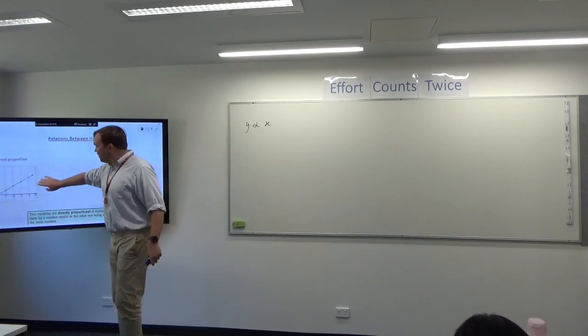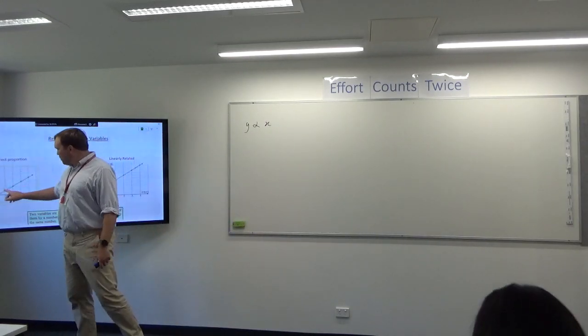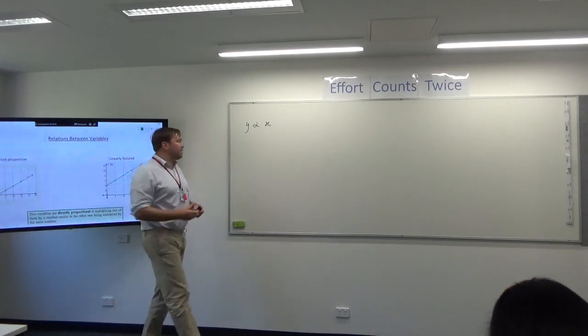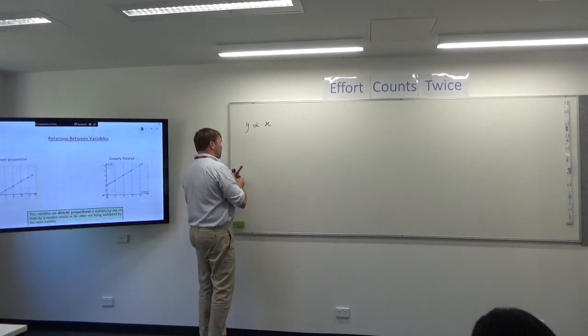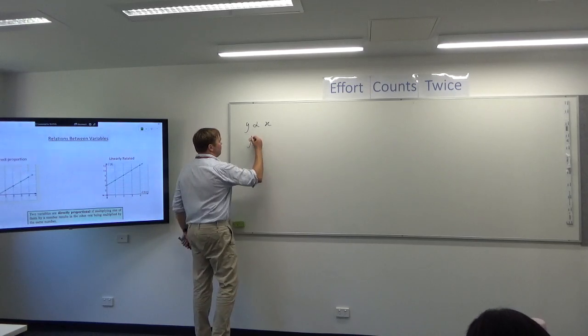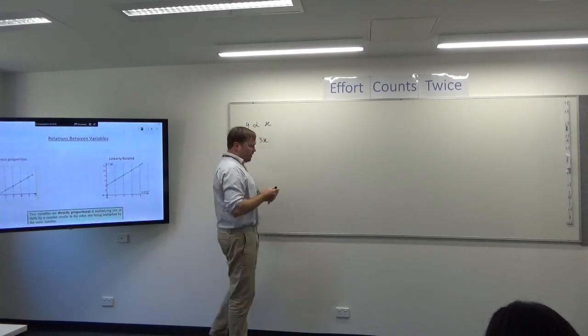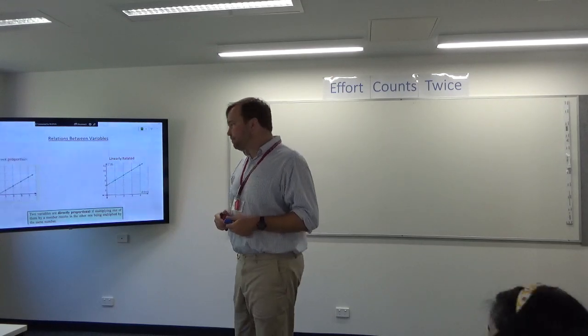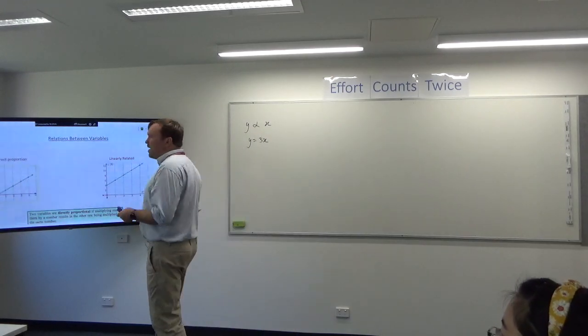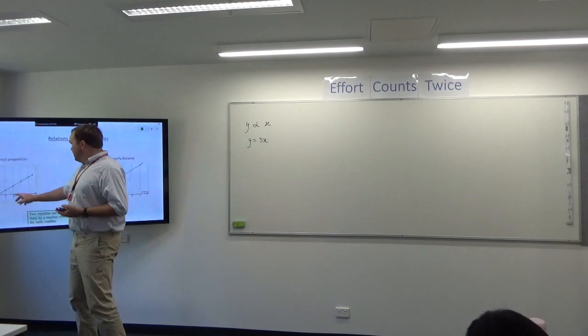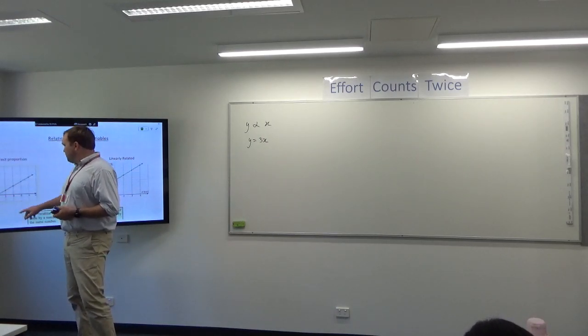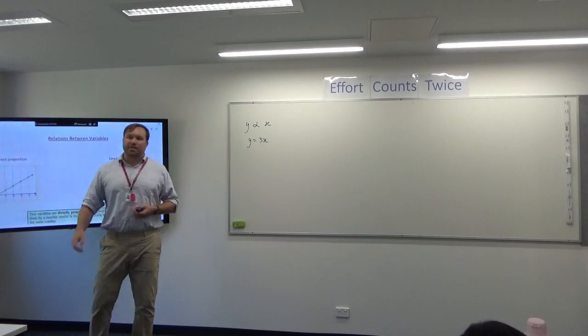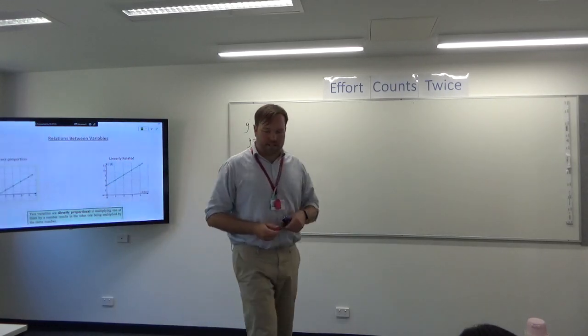This equation is, what, 1 across 3 up, 1 across 3 up. That equation is y equals 3x. But any line that goes through the origin that's a straight line, we would say it's directly proportional. And a way you can think of this is every doughnut costs $3. So 2 doughnuts is $6, 3 doughnuts is $9, etc. It goes up in direct proportionality.